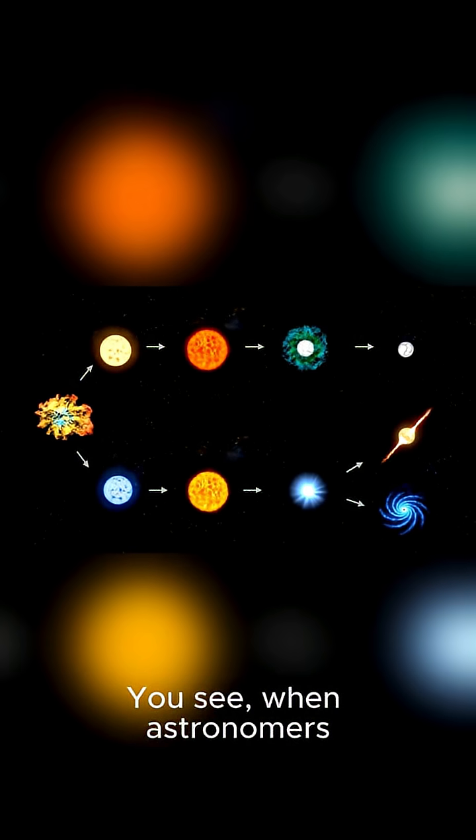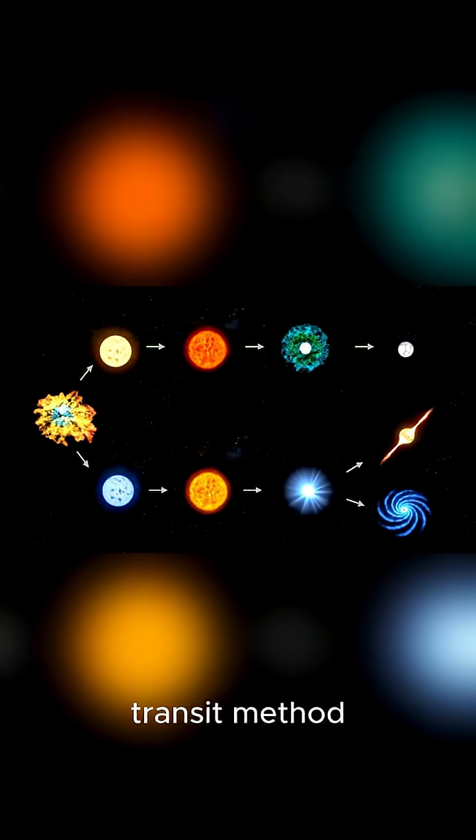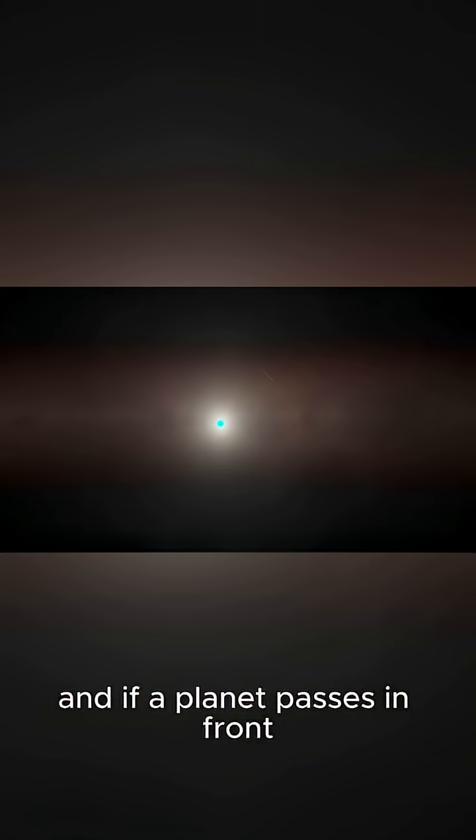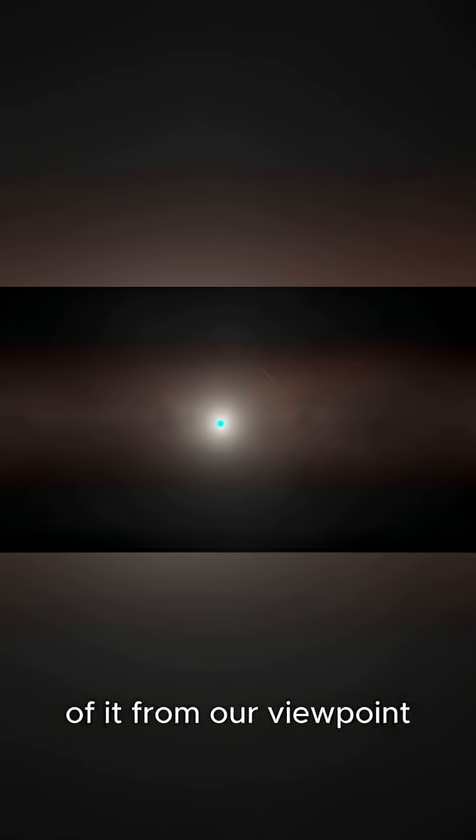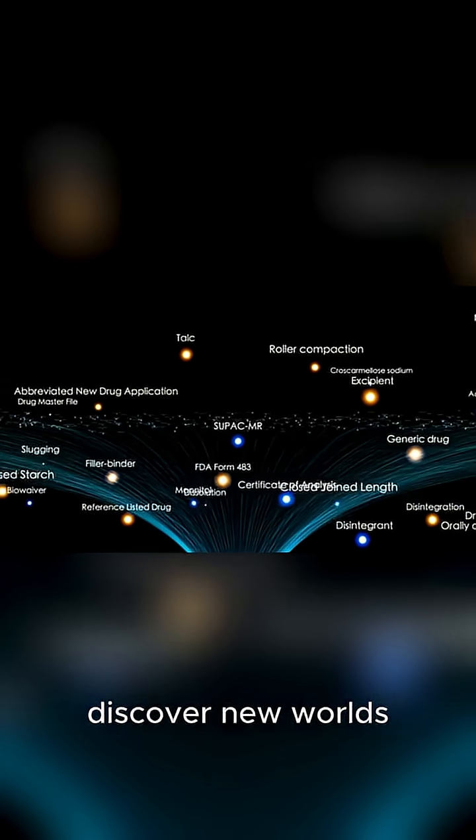When astronomers hunt for distant planets, they often use something called the transit method. They watch a star, and if a planet passes in front of it from our viewpoint, the star's light dims just a tiny bit. That little flicker is how we discover new worlds.